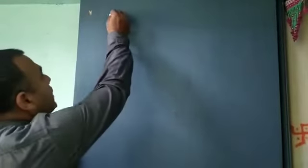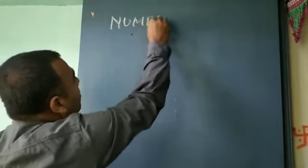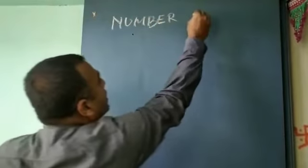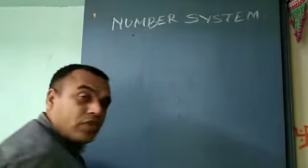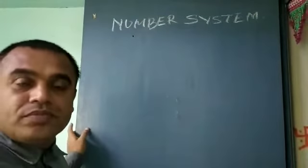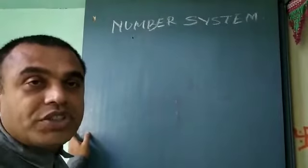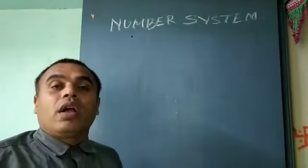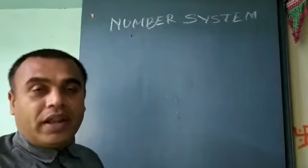Today I am going to take the class 9th rational number, that is Number System, Chapter Number 1. Students, you have studied in class 6, 7, and 8 about the number system. You know natural numbers, whole numbers, and integers.